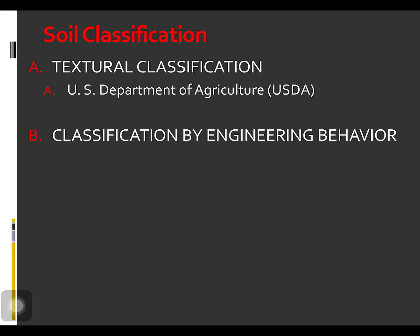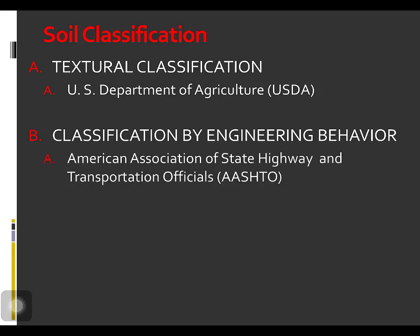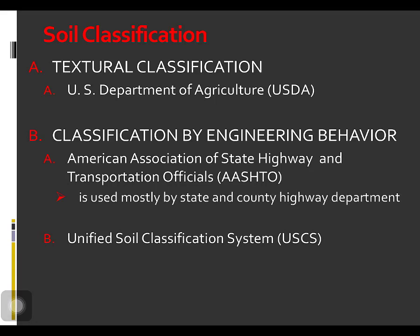Because textural classification systems do not take plasticity into account and are not totally indicative of many important soil properties, they are inadequate for most engineering purposes. Currently there are two classification systems commonly used by soil engineers. Both systems take into account particle size distribution and Atterberg limits: the American Association of State Highway and Transportation Officials (AASHTO) and the Unified Soil Classification System (USCS). The AASHTO classification is used mostly by state and county highway departments, while the USCS is generally preferred by geotechnical engineers. Classification by engineering behavior will be tackled in the next video.